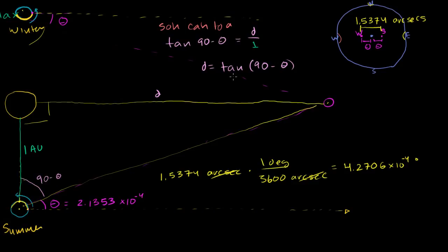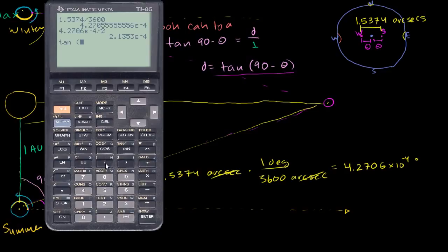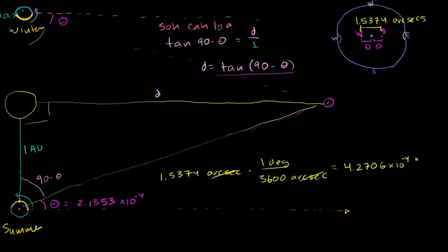Now that we know that, we can figure out the distance. We just take the tangent — make sure your calculator is in degree mode — of 90 minus this angle. So 90 minus 2.1353 times 10 to the negative 4 degrees. And we get this large number: 268,326. Remember what our units were — this distance is 268,326 astronomical units.